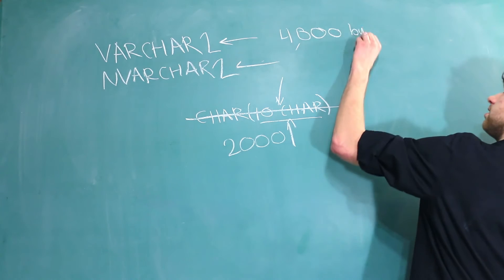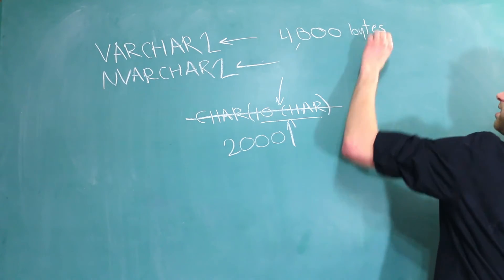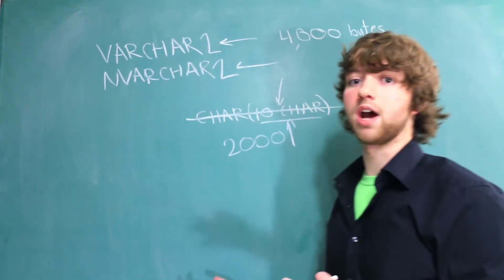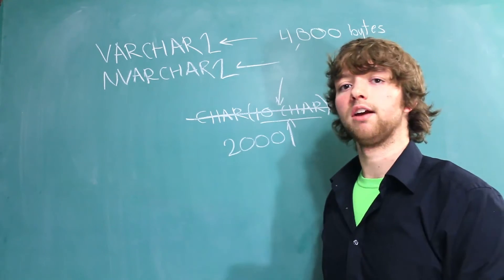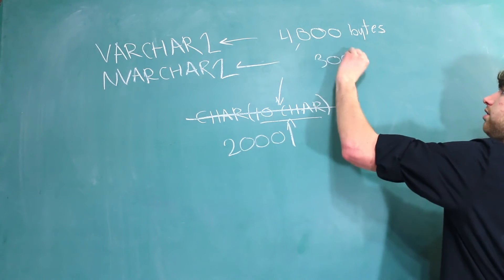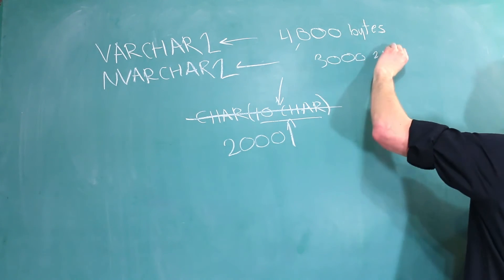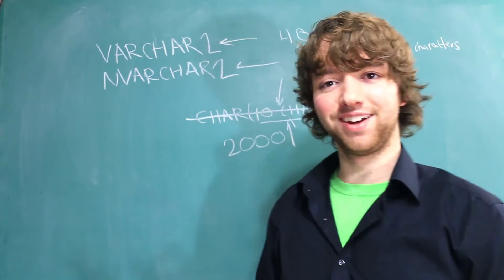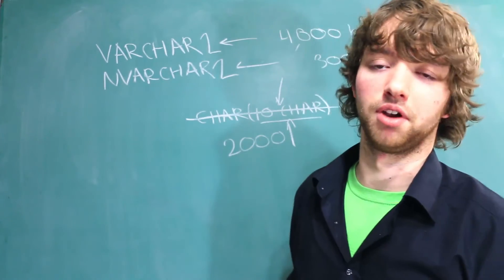Once again, this is bytes. So if you have single byte characters, you can store 4,000 of them. But if you're using Unicode, you want to be careful because if you put in, for example, 3,000 two-byte characters, Oracle is going to bite your head off and not work. By that I mean it's going to throw an error.